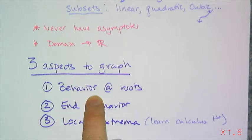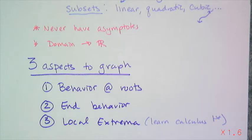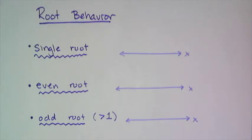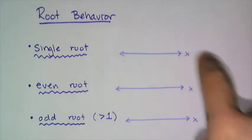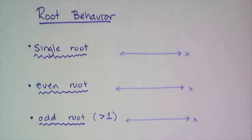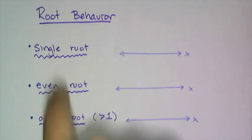Let's talk about root behavior. Remember, a root for a function is where the graph hits the x-axis. I've drawn some x-axes and labeled three different types of roots: single roots, even powered roots, and odd roots. Remember when we solved polynomials and I made you label any root that showed up more than once? This is when you need to know that when you're graphing, because the way the function travels through the root depends on the power of the root.